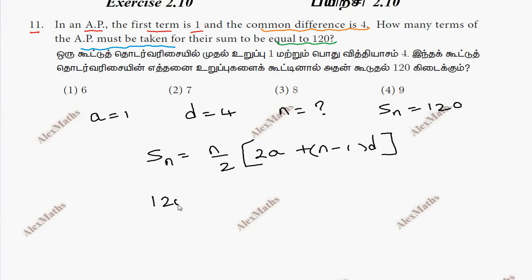So 120 equals n by 2, 2a is 2 into 1, plus n minus 1 into d, which is 4.